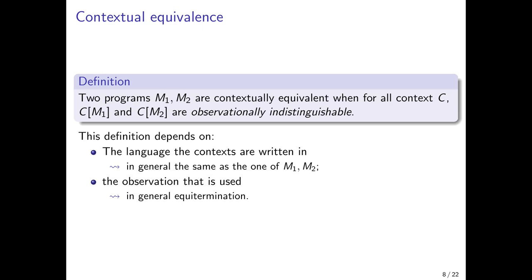The second degree of freedom is the notion of observationally equal used to compare C[M1] and C[M2]. In general, we choose equitermination — that is, we ask that both C[M1] and C[M2] reduce either to a value or both diverge. But depending on whether we allow the value to have free variables or not, we can get different versions of equivalence. We'll use this fact to simplify our definition when working in a setting without call-CC.